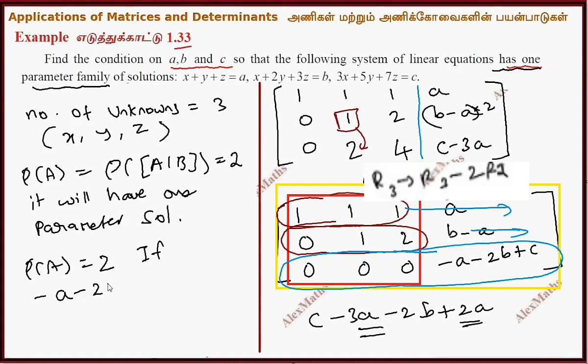If minus a minus 2b plus 2c equals 0, then rank of augmented matrix AB is 2. This is the condition. So c equals a plus 2b.